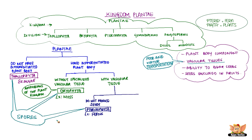The thallophytes, bryophytes, and pteridophytes have naked embryos called spores. The reproductive organs in these groups are inconspicuous and are called cryptogamae, which means those with hidden reproductive organs.